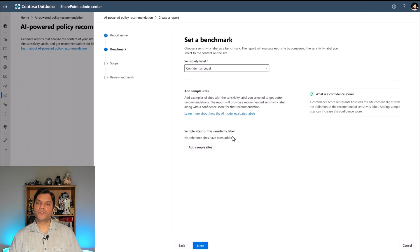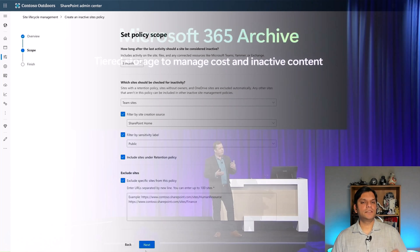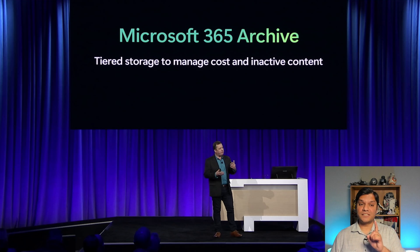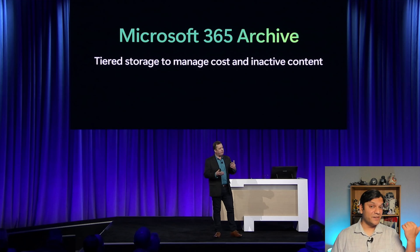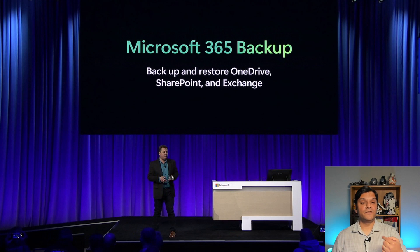Content governance comes with powerful tools to improve your content lifecycle, protection, and storage. First was AI-powered policy recommendations, which use your existing sensitivity labels and can go at different levels. One example is applying policies to find inactive sites, then leveraging the Microsoft 365 Archive — a tiered storage solution to manage cost and inactive content. Because SharePoint being the content store can grow and historical content can get expensive, once sites reach end of life you identify them using the report and move them from active sites into archive locations.